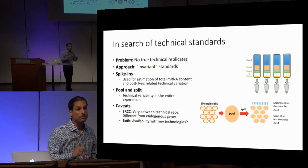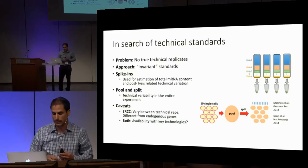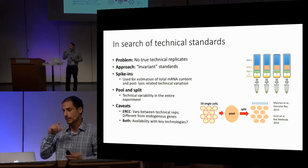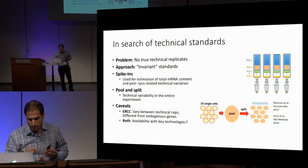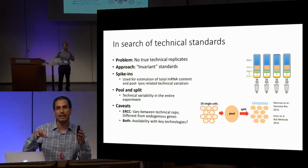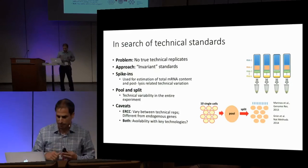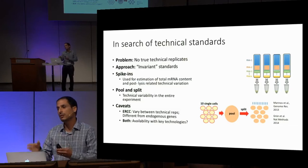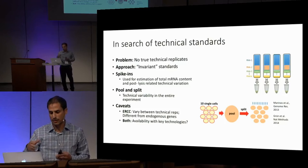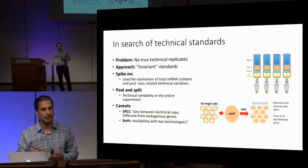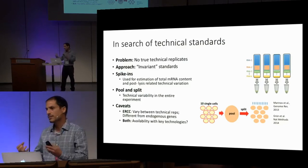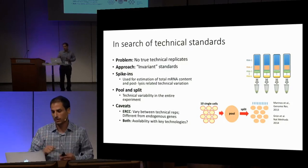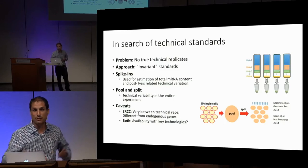The problem is, while these two technologies are helpful — especially spike-ins, which have been used quite a lot — there are caveats. The most popular spike-in collection, ERCC, has been shown to be not too reliable, varying between technical replicates. Also, the properties of these RNAs are intrinsically different from endogenous RNAs in terms of GC content and length. But maybe more importantly, it's still debatable to what extent both of these technologies can be convincingly embedded into key technologies, especially drop-based technologies.